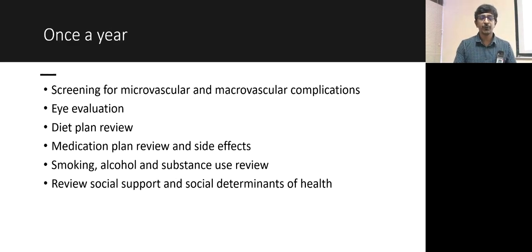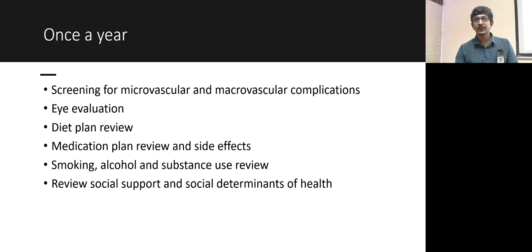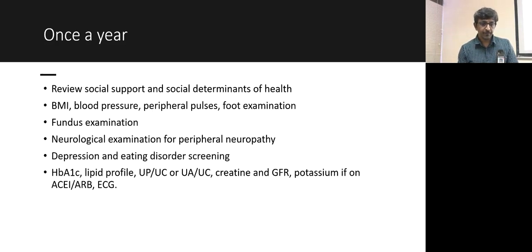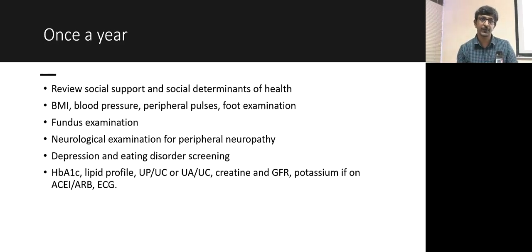Once a year, screen for micro- and macrovascular complications including an eye evaluation. Reassess the diet plan, substance use — smoking and alcohol — and social supports and determinants annually. Annually screen for peripheral neuropathy and perform a fundal examination. Check lipid profile, ECG, creatinine, GFR, UPCR, and potassium (if on ACE inhibitor or ARB) once a year.